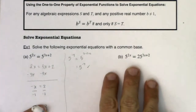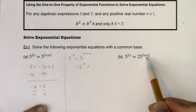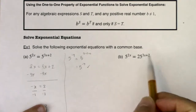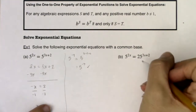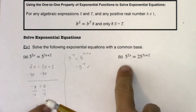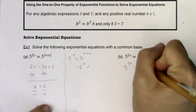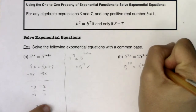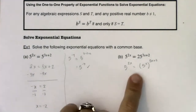Let's move to part B. You might say the bases aren't the same — I have a 5 on the left and a 25 on the right. But think about how you could rewrite 25 specifically as a power of 5. I'm going to simplify the right side: I can write 25 as 5 squared. All of a sudden I have an equation where the bases are the same.